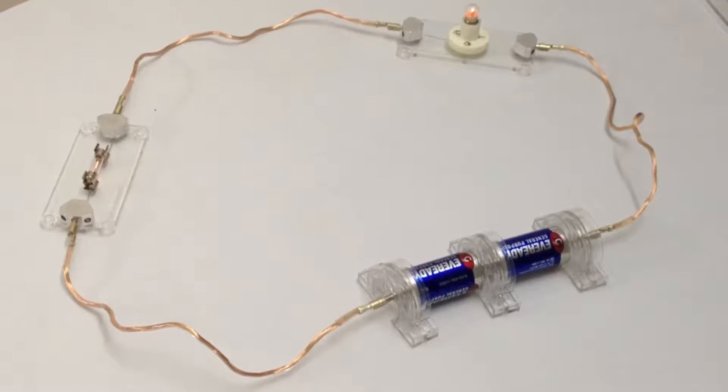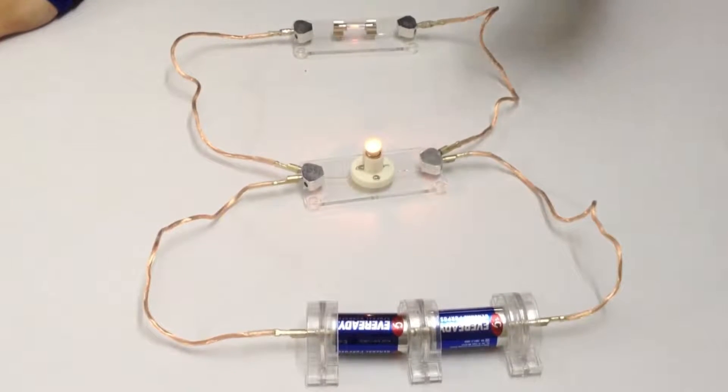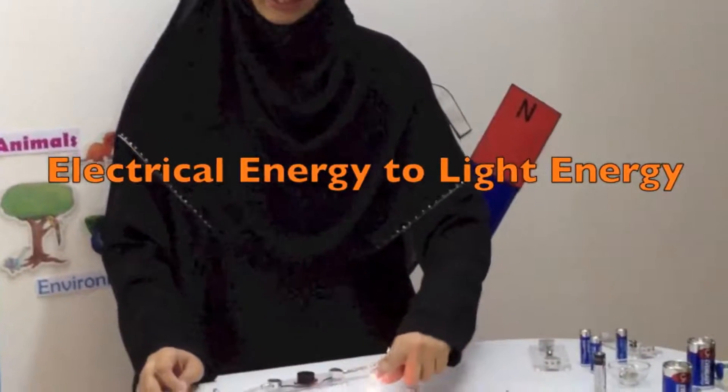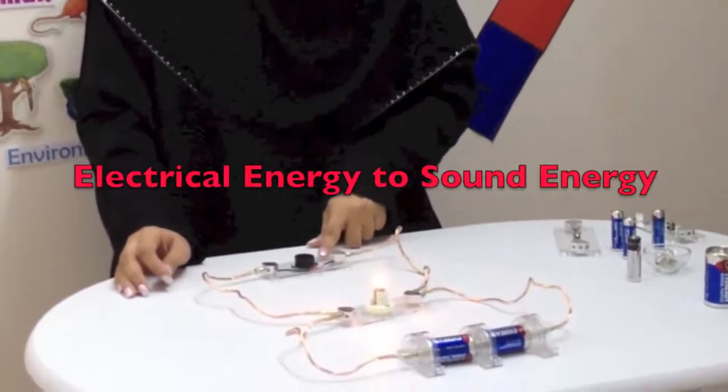In this circuit, we connected two bulbs. In this circuit, there are two bulbs, but we connected them from the other direction. In this example, you can see that electrical energy is changing to light energy, and in this circuit, electrical energy is changing to sound energy.